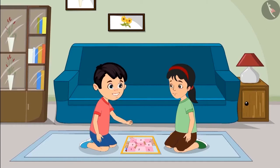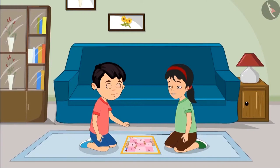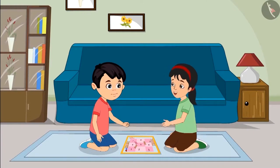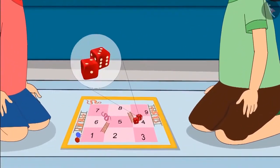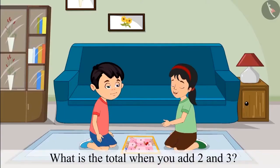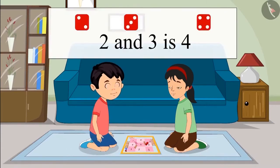Chotu rolls the dice first: a 2 on one die and a 3 on the other. Pinky asks: 'What is the total when you add 2 and 3?' Chotu incorrectly says: 'When we add 2 and 3 we get 4.' Pinky says this is incorrect and asks him to explain how he counted. Chotu says '1 and 2' for the first die, then counts '2, 3 and 4.'